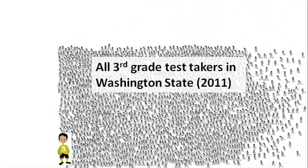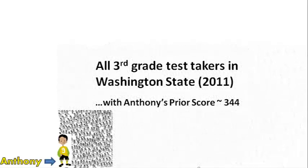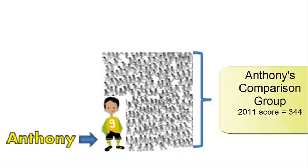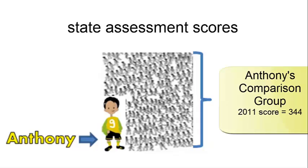Of all these third graders in the state, many others scored a 344. Let's call this Anthony's comparison group because these students had a similar level of academic proficiency as Anthony. Anthony's comparison group is defined solely on their state assessment scores, not on any other characteristics.